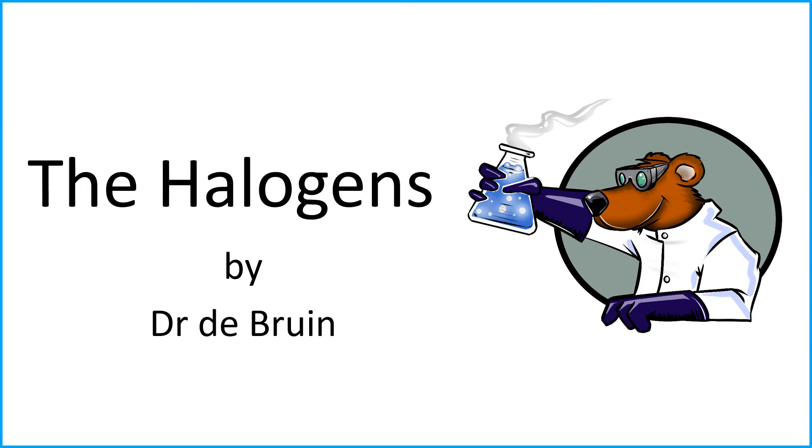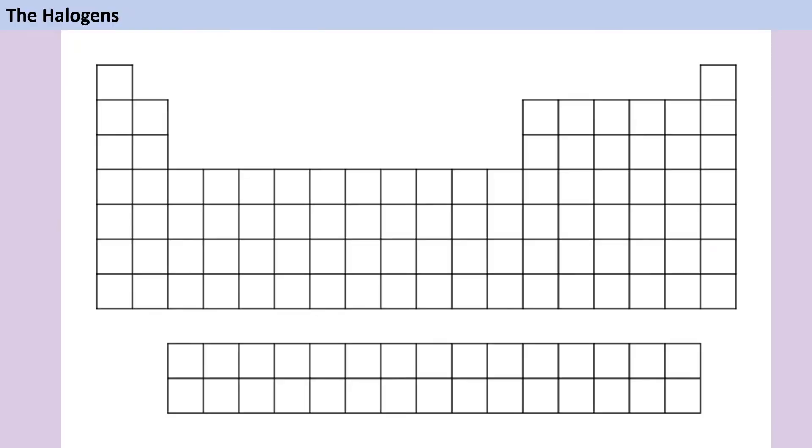Today we're looking at the periodic table, and specifically a group known as the halogens. Let's get started. The halogens are found in Group 7 of the periodic table, on the right hand side, just before we get to the noble gases.